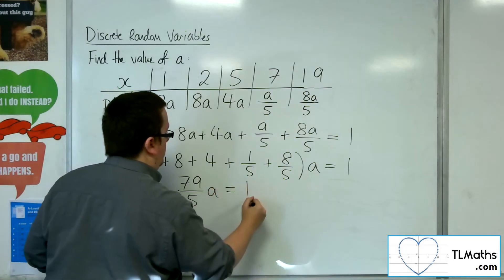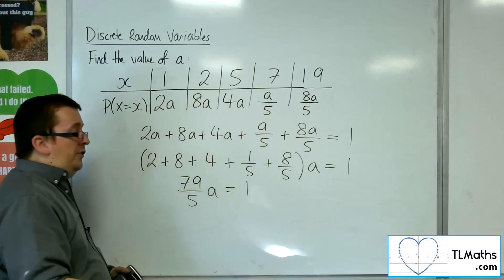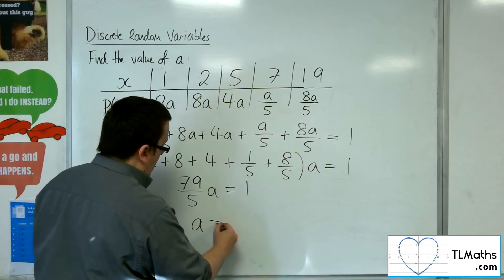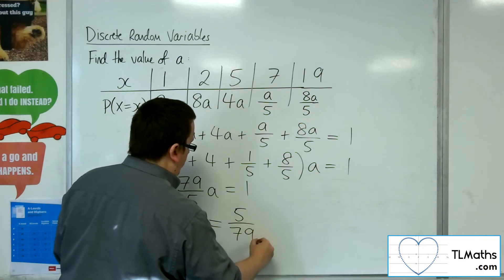a has got to be equal to 1. So if I divide both sides by 79 fifths, I get that a has got to be 5 79ths.